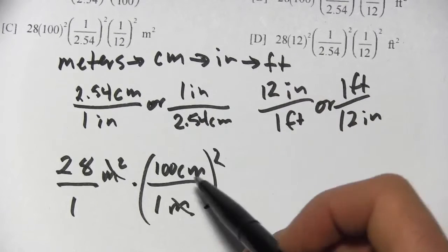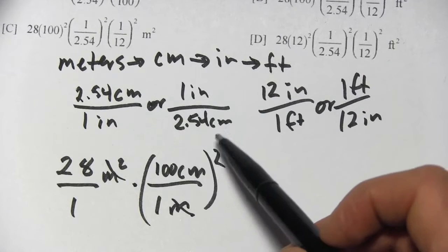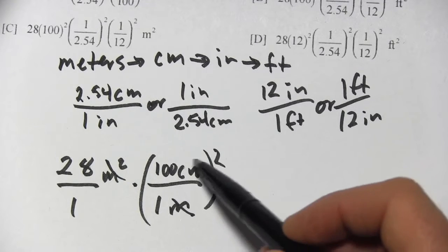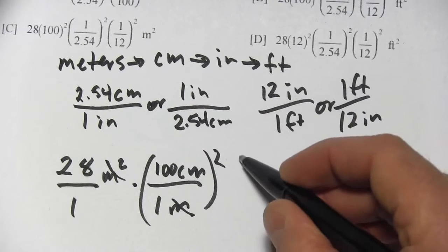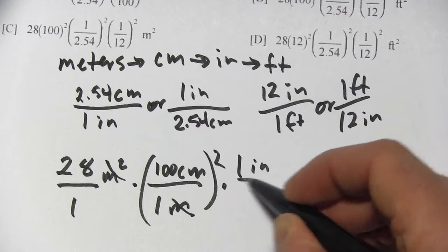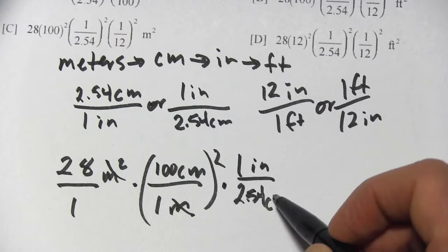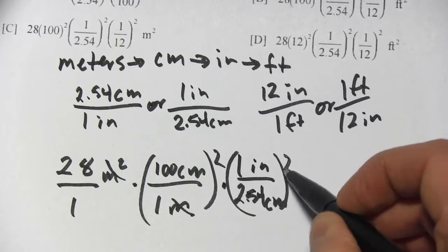Now these units will cancel. We're in centimeters. So our next step is to get into inches. And we want to choose the one where centimeters is on the bottom. So that's this one. So 1 inch over 2.54 centimeters. Square that whole thing.